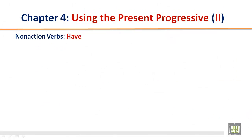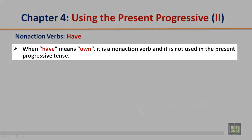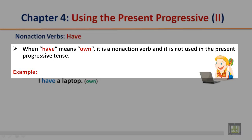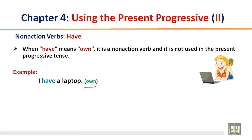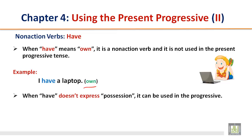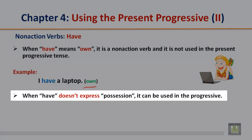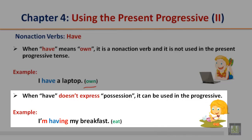Non-action verbs — have. When 'have' means 'own,' it is a non-action verb and is not used in the present progressive tense. Example: I have a laptop (another way: I own a laptop — the meaning is the same). When 'have' doesn't express possession, it can be used in the progressive. Example: I'm having my breakfast.